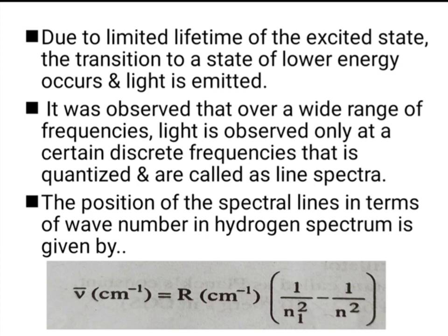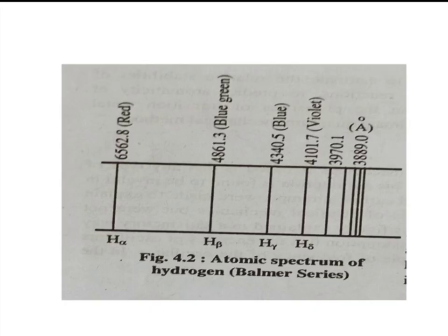The position of the spectral lines in terms of wave number in the hydrogen spectrum is given by the Rydberg equation: μ̄ (in cm⁻¹) = R × (1/N₁² − 1/N²), where R is the Rydberg constant in cm⁻¹ and N is larger than N₁. This is the atomic spectrum of hydrogen for the Balmer series. The H-alpha, H-beta, H-gamma, and H-delta lines correspond to red, blue-green, blue, and violet light respectively.